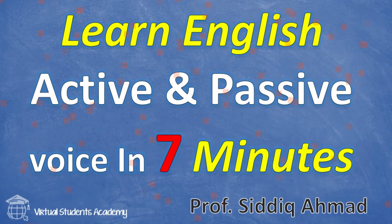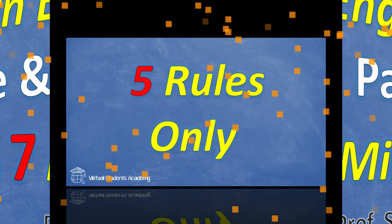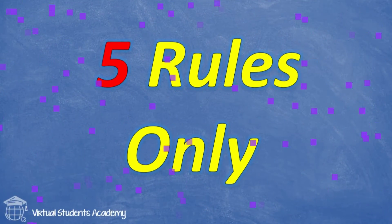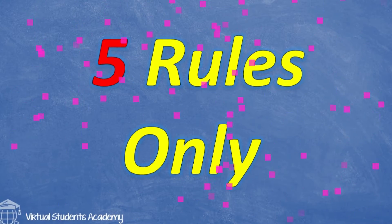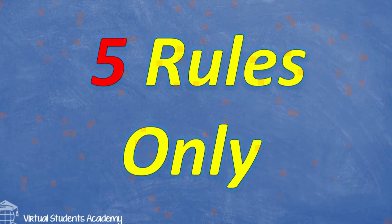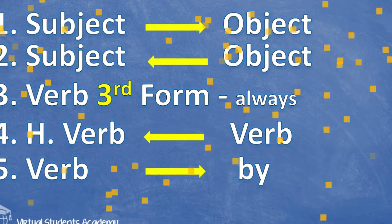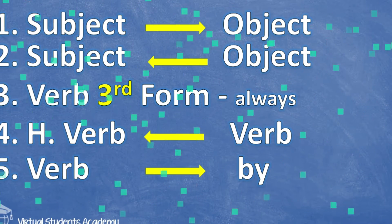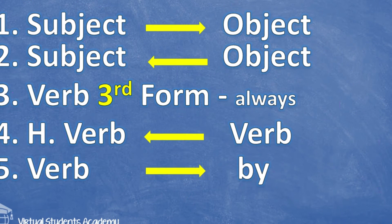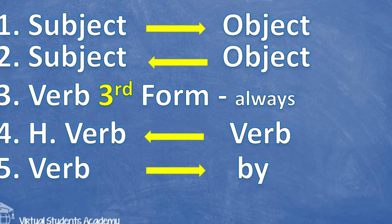Let's have a look at the five rules. Remember, there are only five rules: one, two, three, four, five. There are only five rules. Have a look at them and I believe you can memorize them very easily.